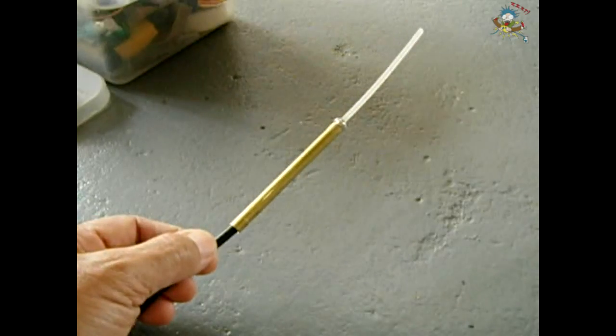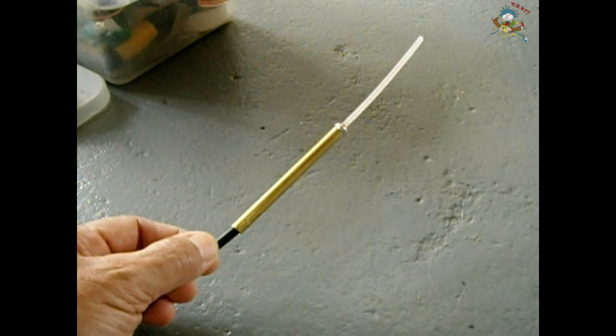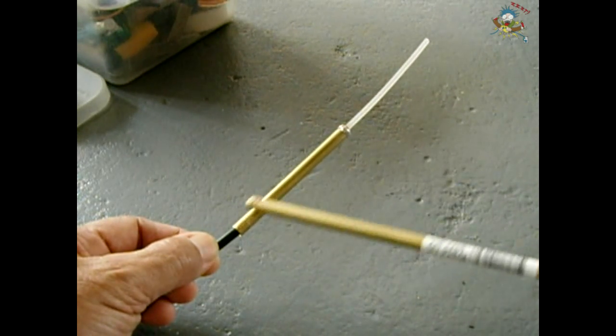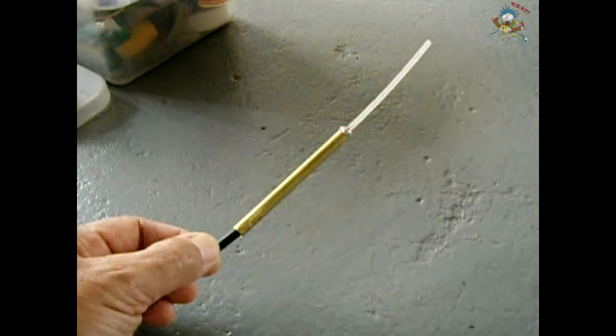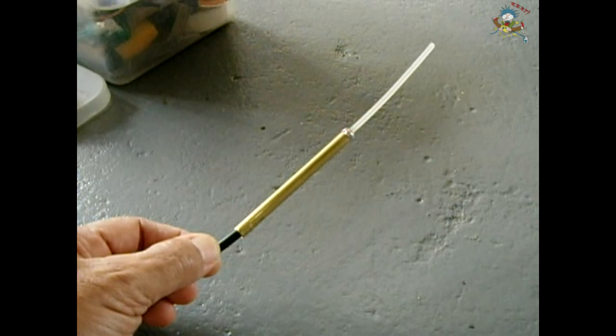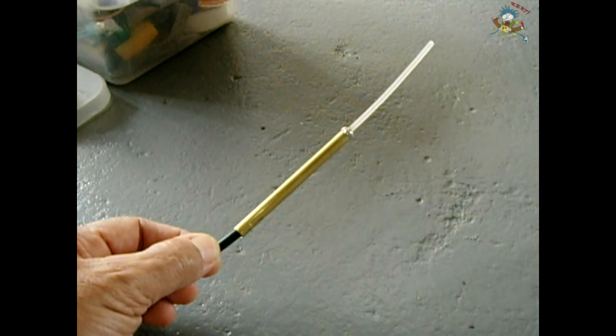Once I place the BNC connector onto the coax, I will then slide some heat shrink tubing over the entire antenna, shrink it down, and it'll make a nice rubber ducky type of antenna at a fraction of the cost - maybe three dollars for that antenna.